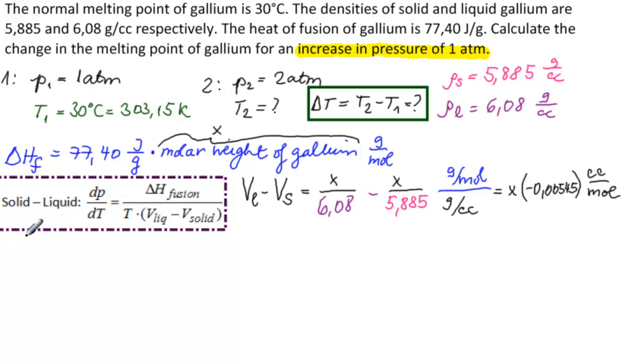Let us see what we have. We have dp/dt is equal to 77.40x joules per mole divided by T, and then we have x times minus 0.00545 cubic centimeters per mole. We can see that the x cancel, so we don't need to go find the molar weight of gallium. The moles cancel, and we have joules versus volume, which gives us pressure. And we have Kelvin here, so all our units are correct.